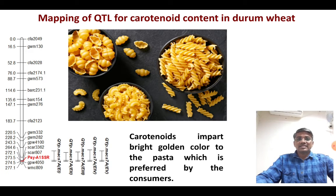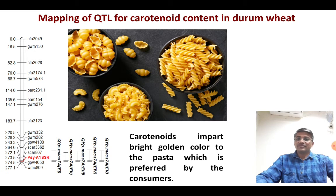This is an example of mapping a QTL for carotenoid contents in durum wheat. Carotenoids impart bright yellow color to pasta, which is preferred by the consumer. Therefore, high carotenoid content is a preferred trait as far as the pasta industry is concerned.